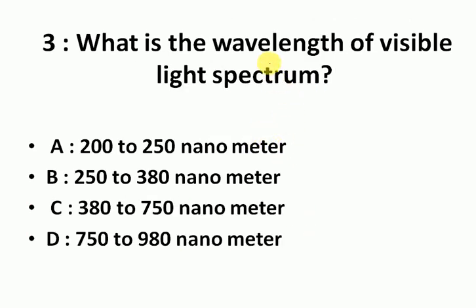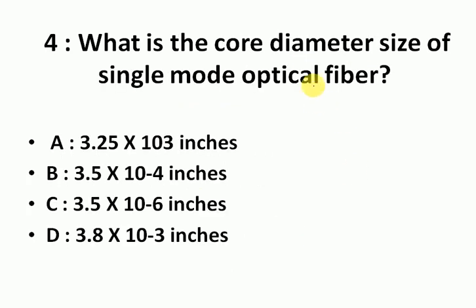What is the wavelength of visible light spectrum? The answer is 380 to 750 nanometers. What is the core diameter size of single mode optical fiber? The answer is 3.5 into 10 to the power of minus 4 inches.